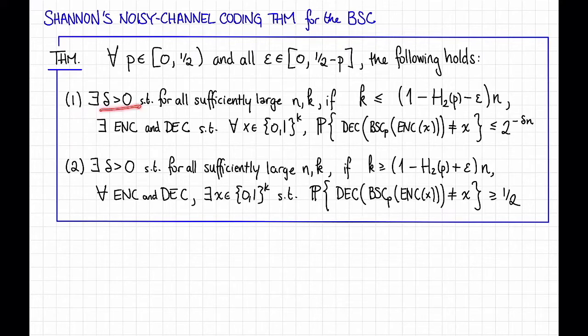So first, there is some constant delta greater than zero, so that for all sufficiently large n and k, if k is at most (1 - H(P) - ε) times n, then there exists an encoding algorithm and a decoding algorithm, in particular there exists a code, so that for all messages x in {0,1}^k, the failure probability is teeny tiny.